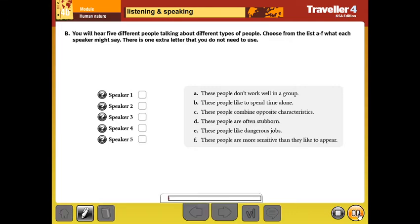4b. Listening and speaking. Listening. B. You will hear five different people talking about different types of people. Choose from the list, A to F, what each speaker might say. There is one extra letter that you do not need to use.